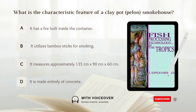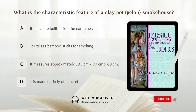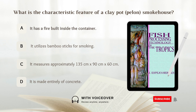What is the characteristic feature of a clay pot smokehouse? A. It has a fire built inside the container. B. It utilizes bamboo sticks for smoking. C. It measures approximately 135 cm by 90 cm by 60 cm. D. It is made entirely of concrete. Answer: A. It has a fire built inside the container.